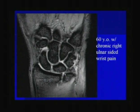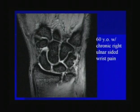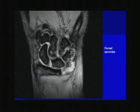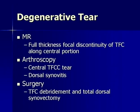Here's a case of a 60-year-old with chronic right-sided ulnar wrist pain. You can see a central tear or perforation within the articular disc with associated dorsal synovitis. This patient went on to arthroscopy, which confirmed these findings, and had a debridement of the TFC and a total dorsal synovectomy.